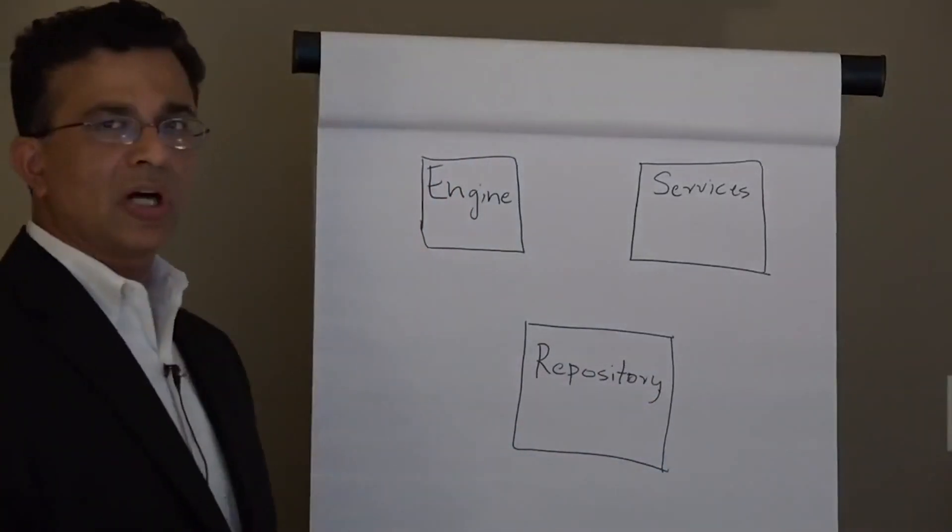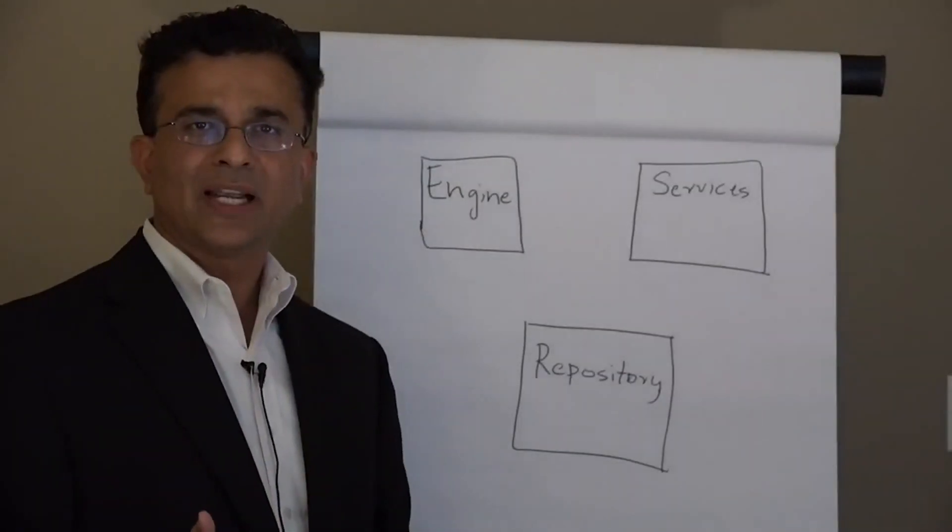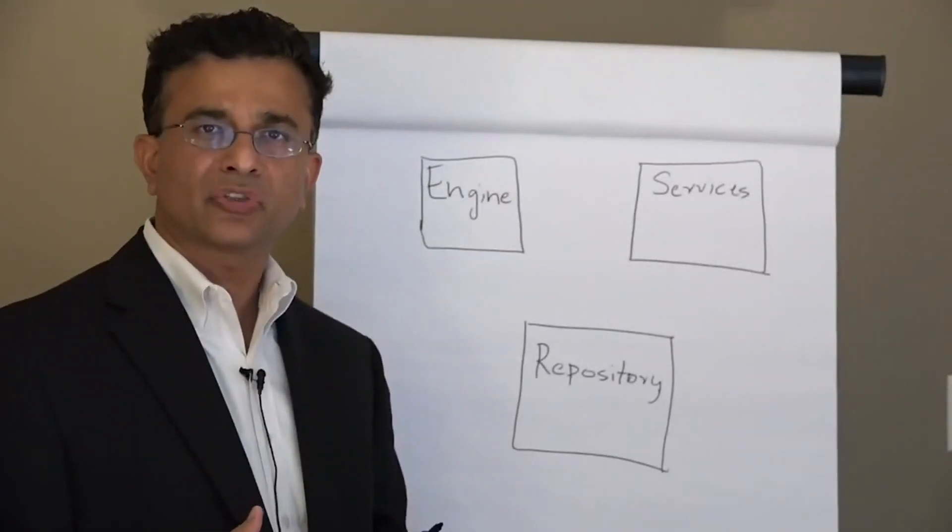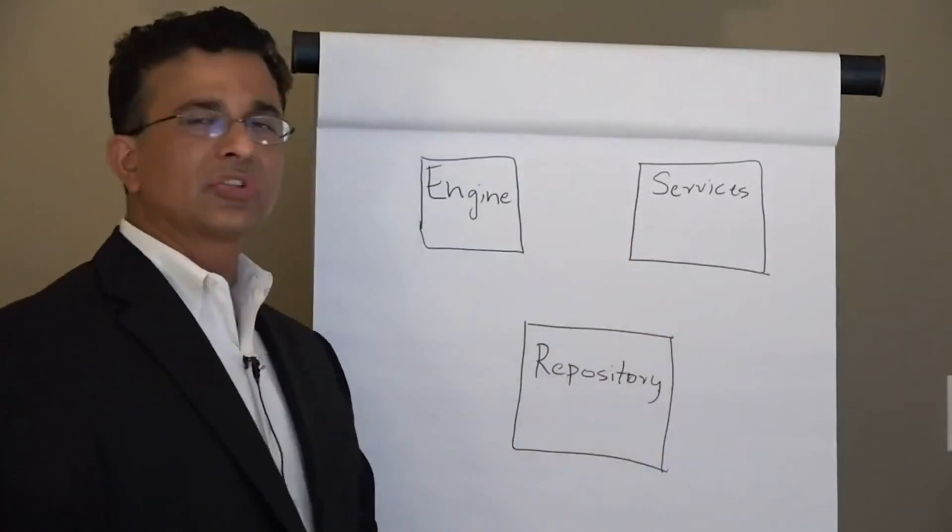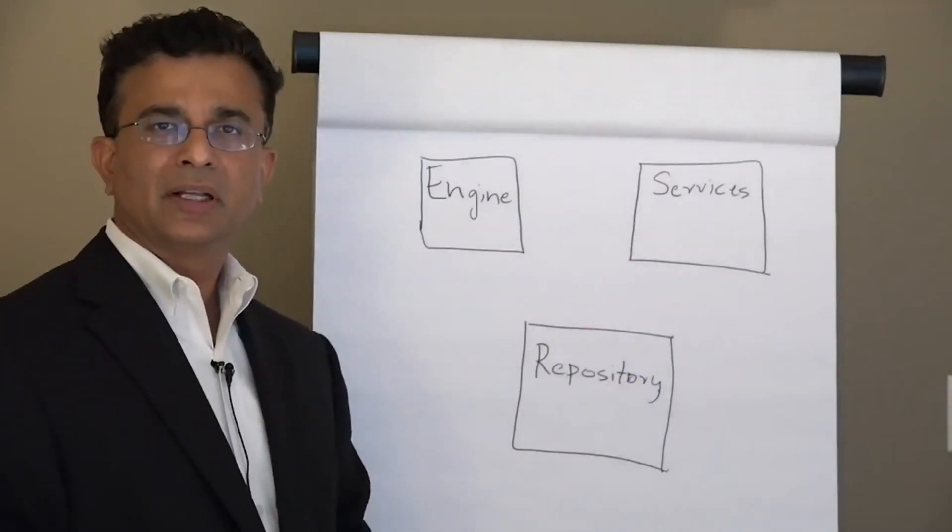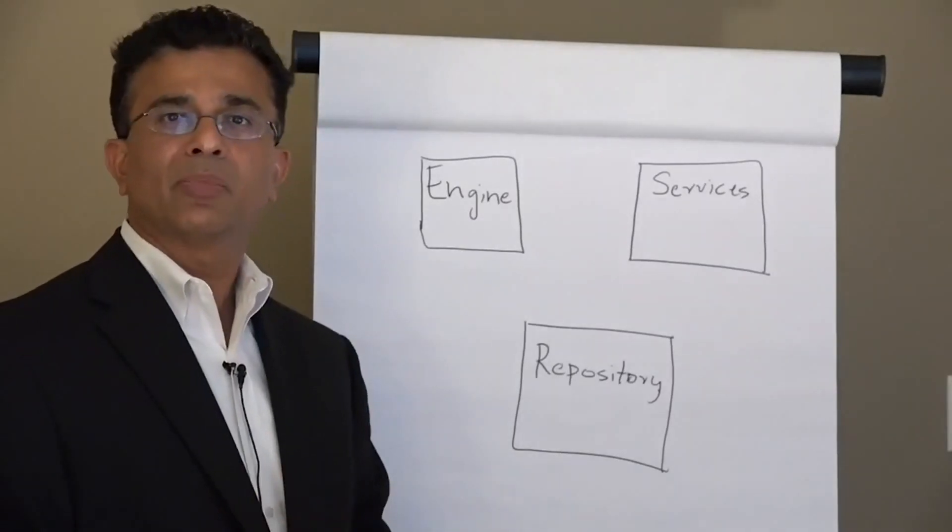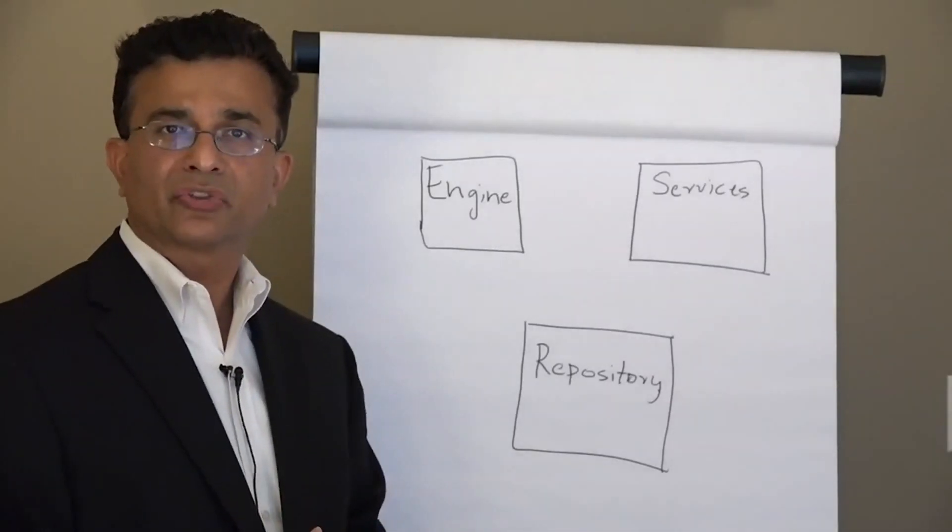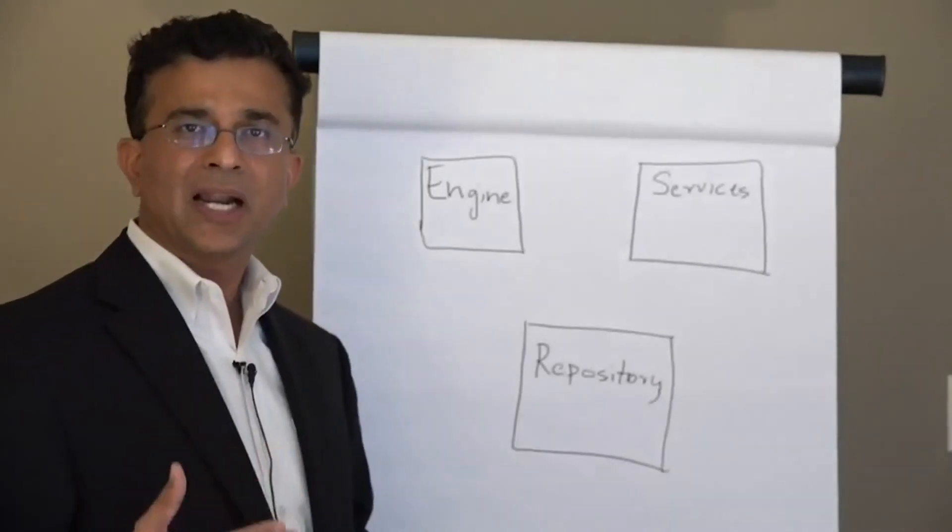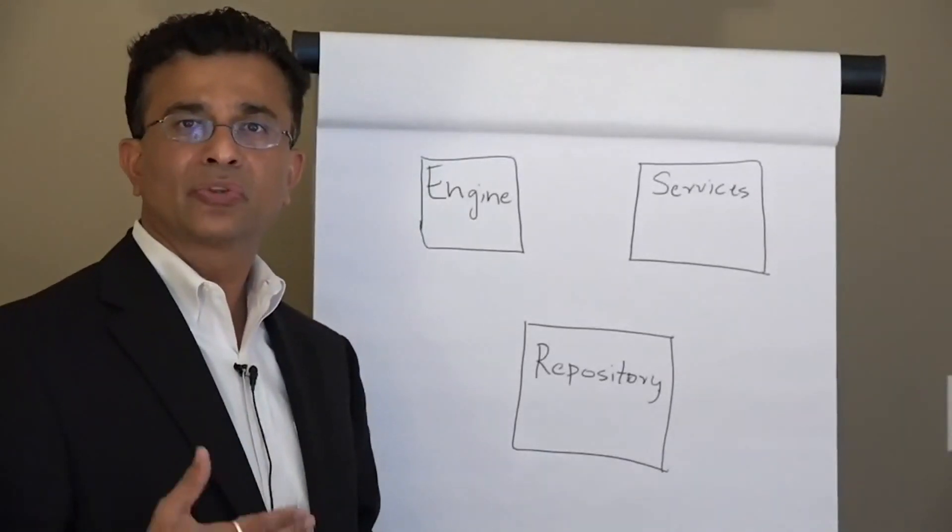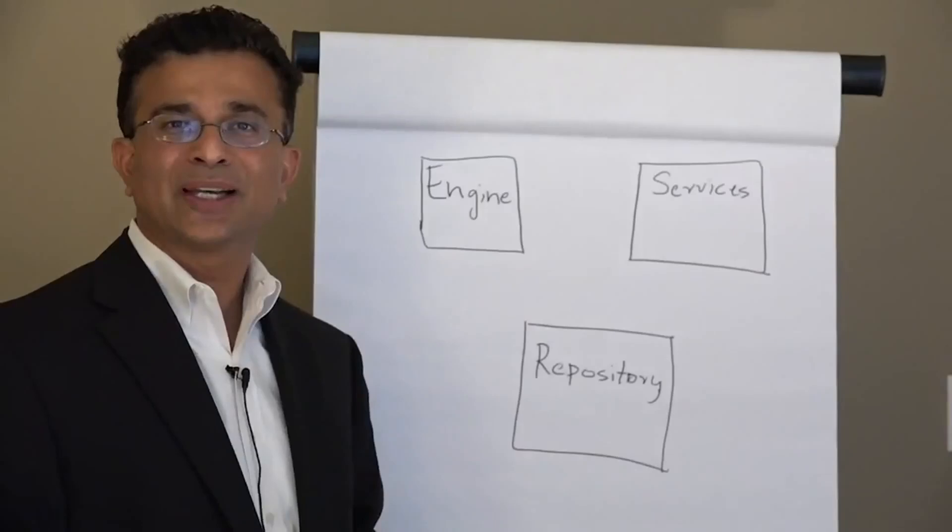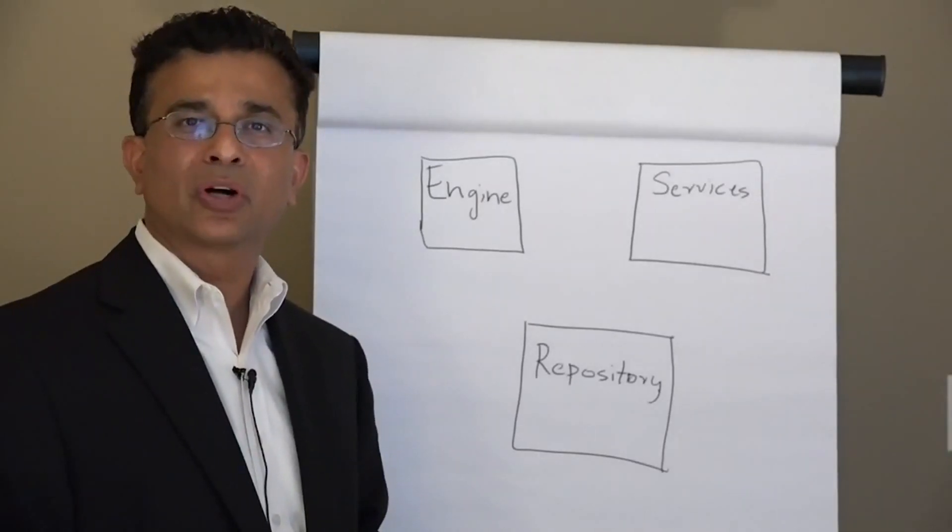The engine tier has got all the engines, the DataStage server engine and the parallel engine. These engines are required for the proper functioning of the DataStage processes. The second tier is the services tier where we have got the application server. It could be WebSphere application server or you could also use WebLogic. There are ways to use WebLogic in this infrastructure if you already have WebLogic. Most of the customers do use WebSphere. You can either use a brand new installation of WebSphere. When you install Information Server, it comes with a WebSphere, also known as WAS. Or you can also configure an existing WebSphere application server to work with your new installation.